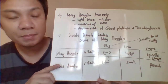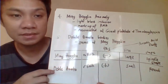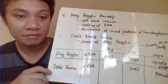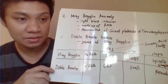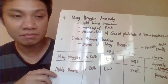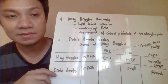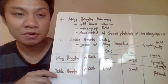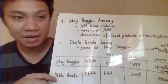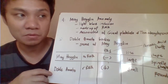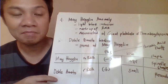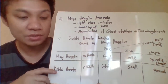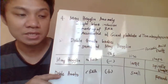In terms of the periodic acid-Schiff cytochemical stain, May-Hegglin will give a negative result, whereas Döhle bodies will give a positive result. In terms of size, May-Hegglin is much larger compared to Döhle bodies. In terms of shape, May-Hegglin would have a spindle shape, whereas Döhle bodies would have a round shape.